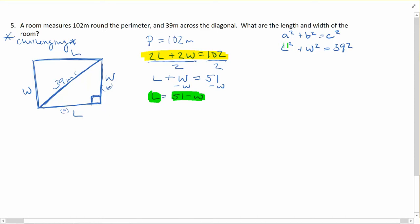So I now have an expression for length. I know L could also be written as 51 minus W. So if we go back to our Pythagoras equation here, what happens if I replace the L there with 51 minus W instead? Because they are the same thing. I've just found that the length is equal to 51 minus W. So let's put that in: (51 - W)² + W² = 39².